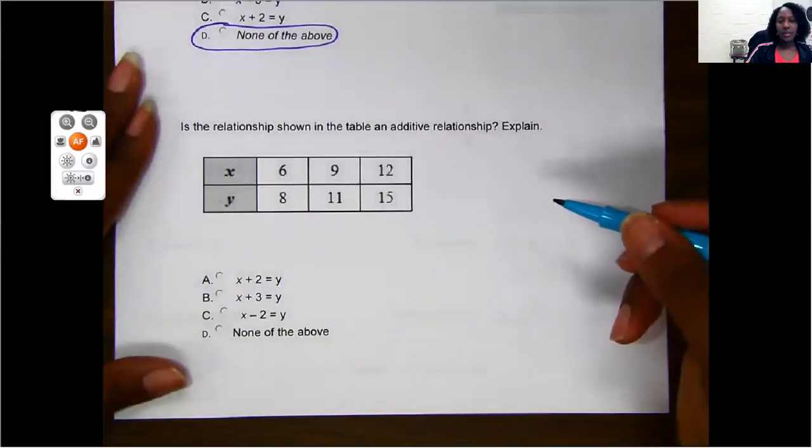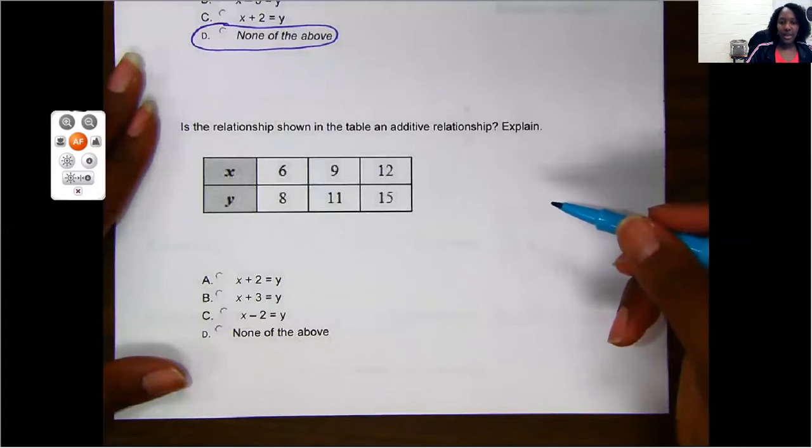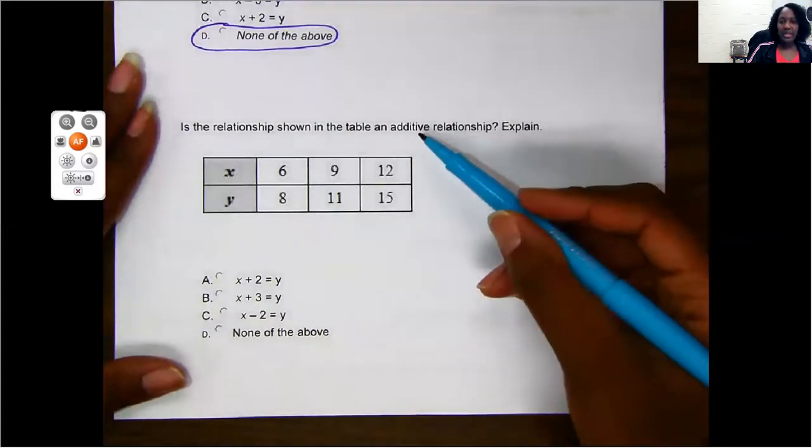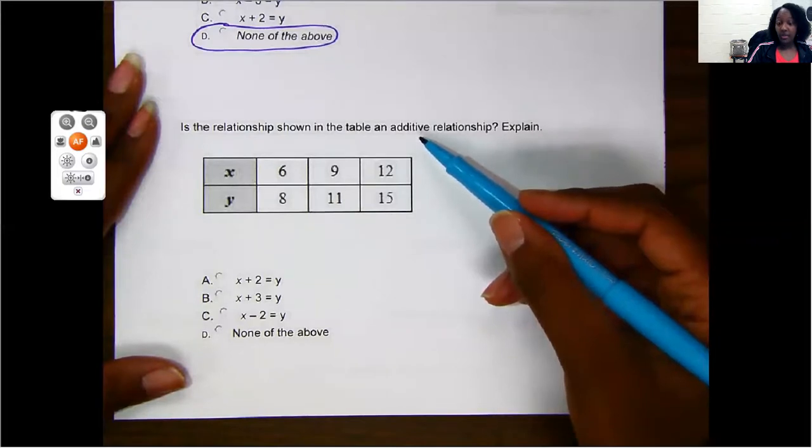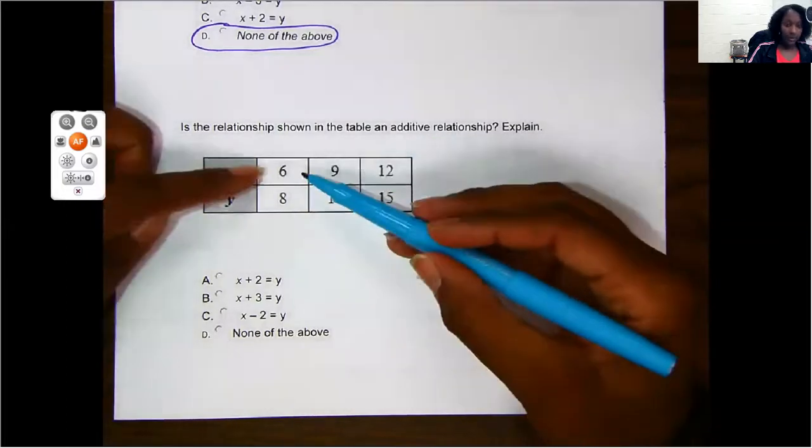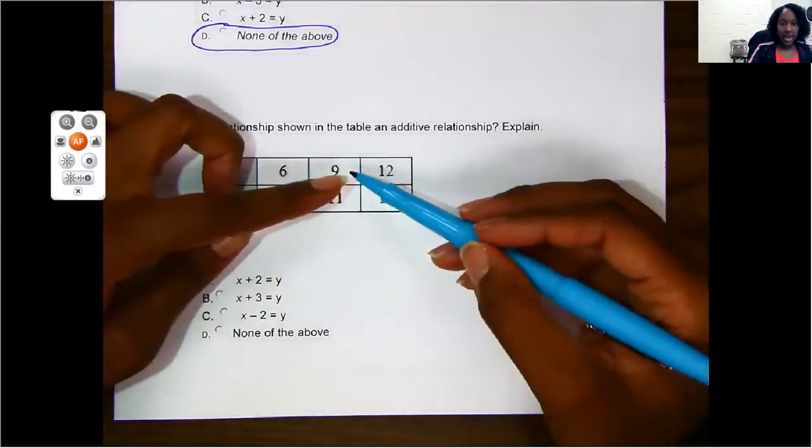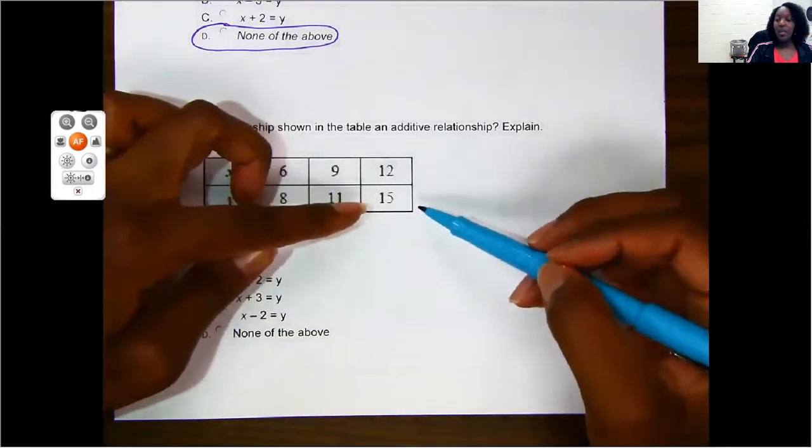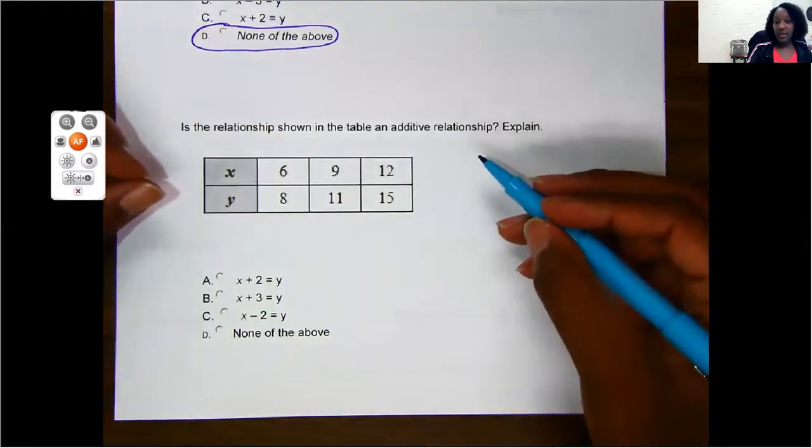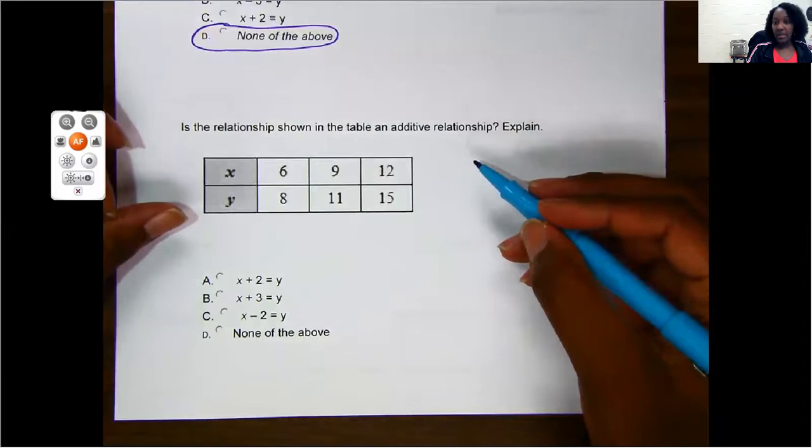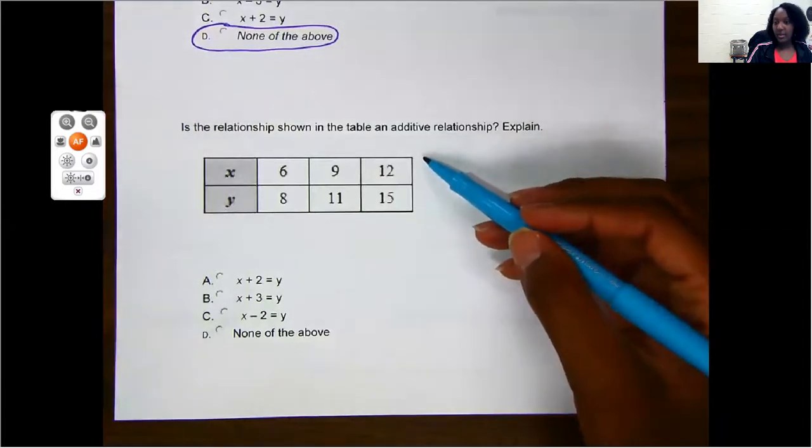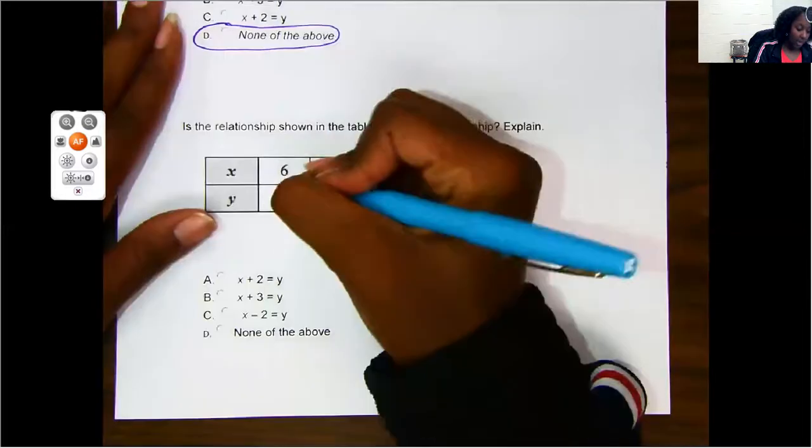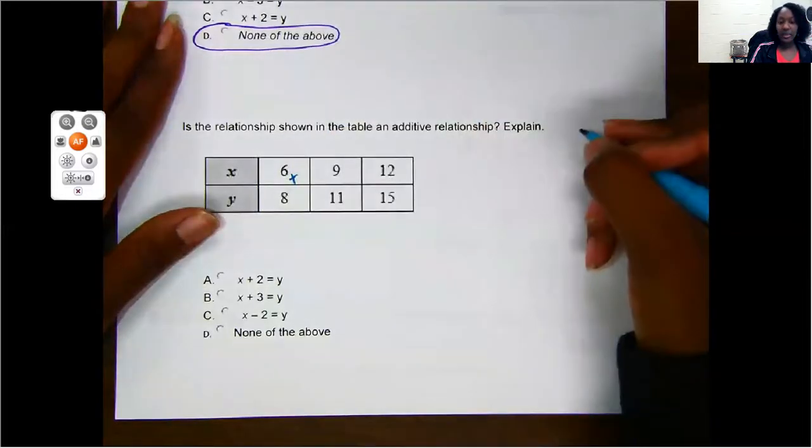Is the relationship shown in the table an additive relationship and explain, okay? So again, it has narrowed it down to us to additive relationship. Remember, an additive relationship is if you add or subtract. So let's look at our numbers. We go 6, 8, 9, 11, 12, 15. My numbers are increasing. So that means I either added or multiplied. But because this is an additive relationship, I'm going to knock out the multiplication. I need to have added something. So what can I add to 6 to get 8?